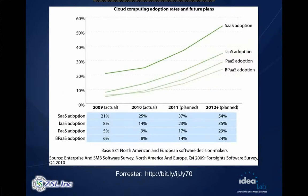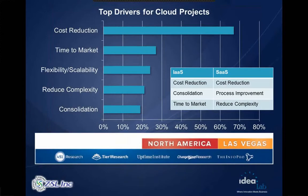Cloud adoption rates from a 2009 Forrester report show expected growth across SaaS, IaaS, and PaaS — all these adoption models are growing. The top drivers for cloud adoption are cost reduction, time to market, flexibility, reduced complexity, and consolidation.